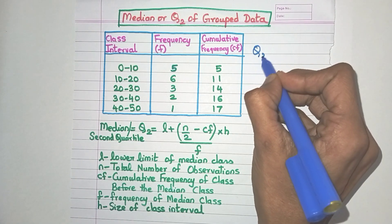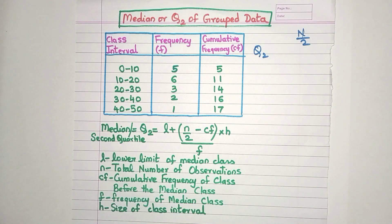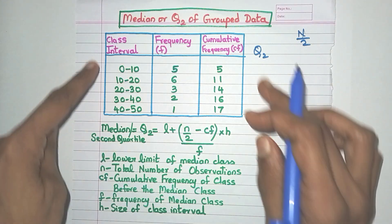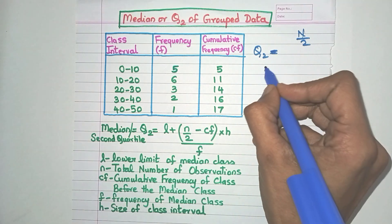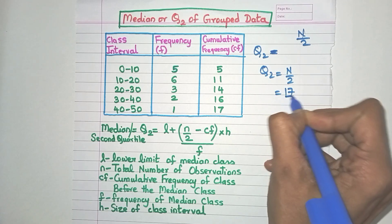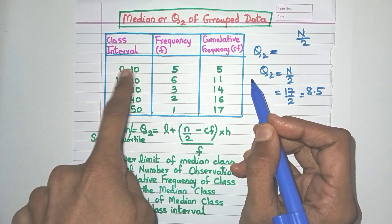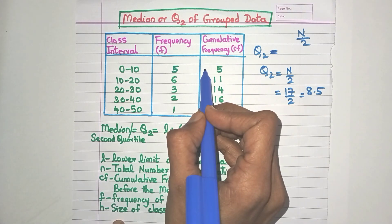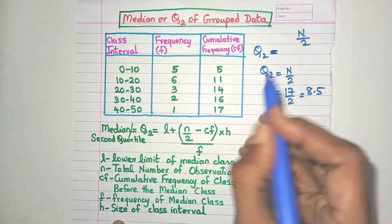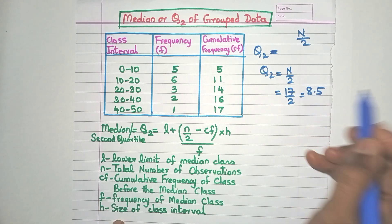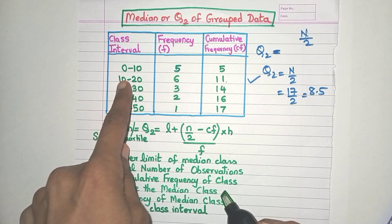Now let's calculate Q2, the second quartile. Q2 is the observation at the n/2th position, also known as the median. The formula for Q2 has the same structure. Using the same data and cumulative frequency values, Q2 lies at 17/2, which is 8.5. The 0 to 10 class has CF 5 (observations 1–5), so 8.5 is not there. The 10 to 20 class has CF 11 (observations 6–11), so 8.5 lies here.